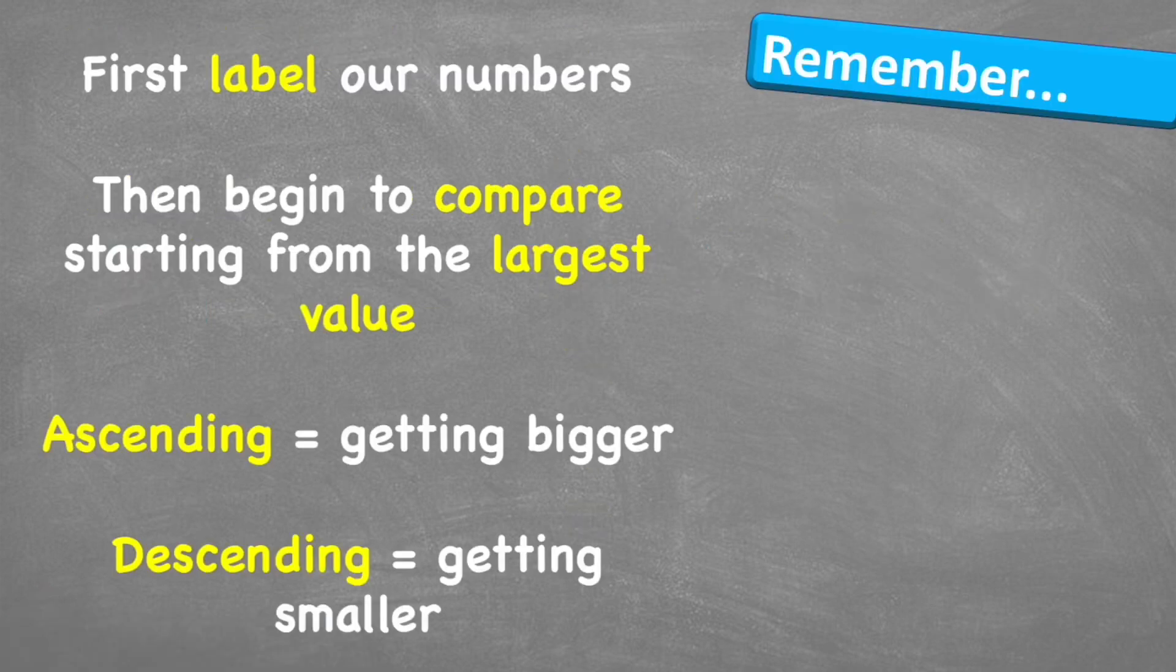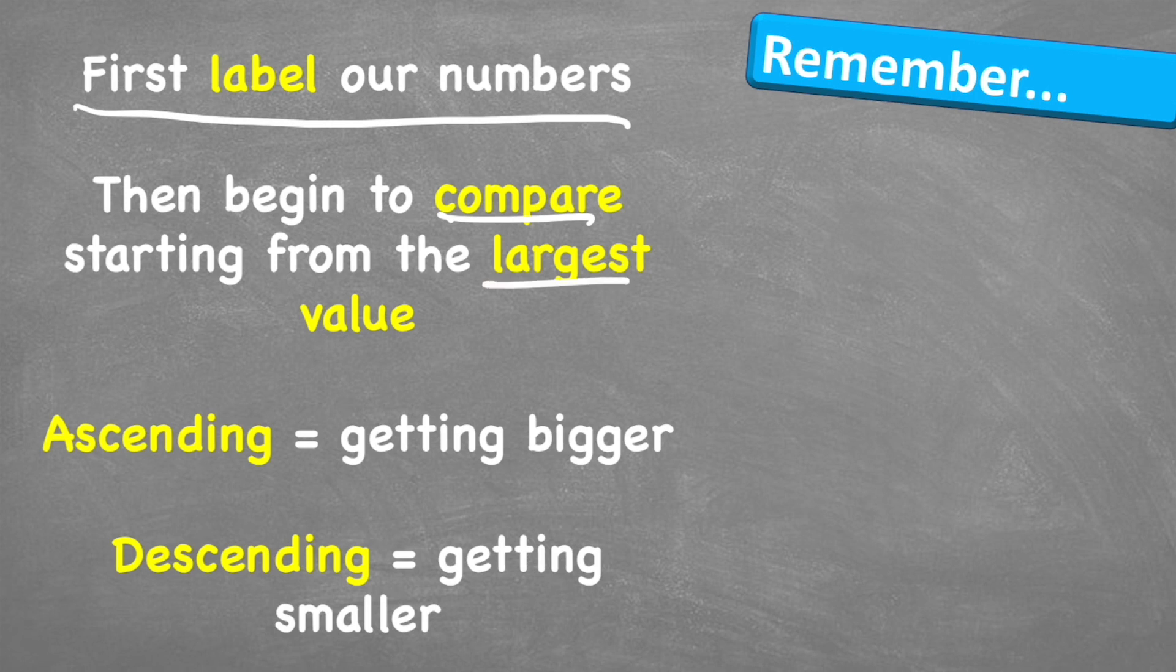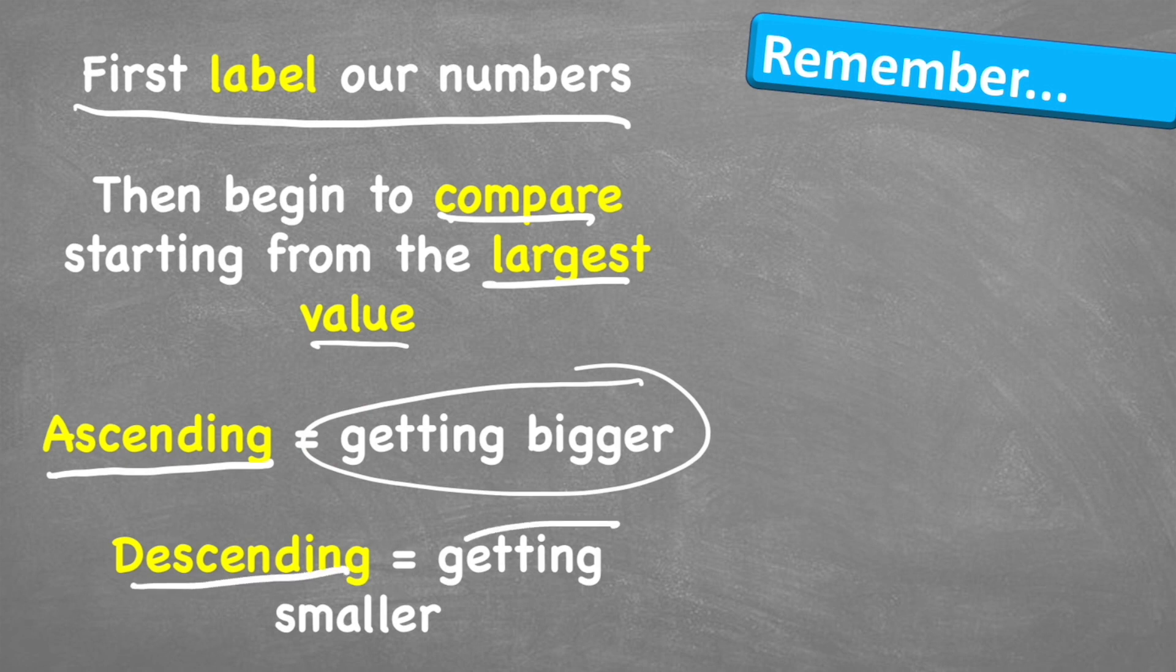That is everything you need to know about ordering and comparing numbers. Let's have a last think about what to remember. First, we're going to label our numbers. This is really going to help us make sure we understand what number is in what value column. Then we're going to begin to compare, starting with the largest value. And remember that ascending means that our numbers get bigger. And descending means that our numbers get smaller.